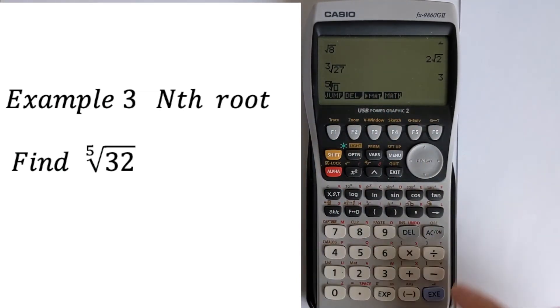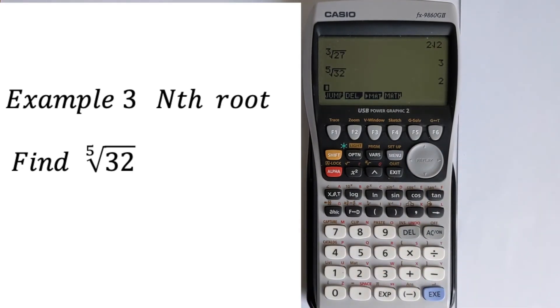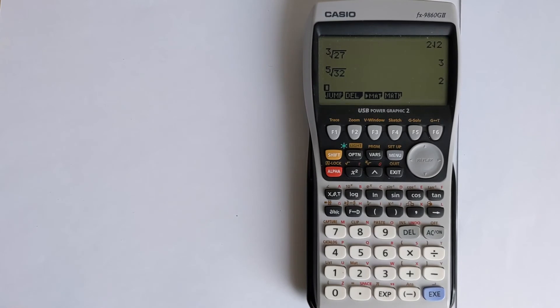So we'll take the fifth root in our example of 32 and then we evaluate that and of course it comes out as 2.